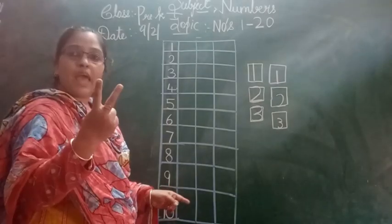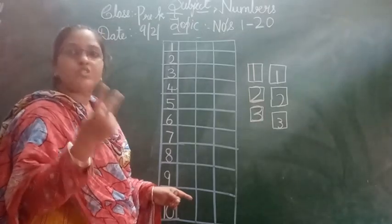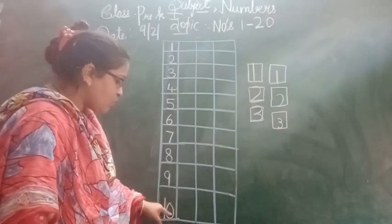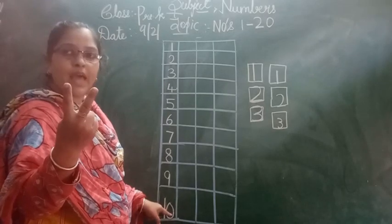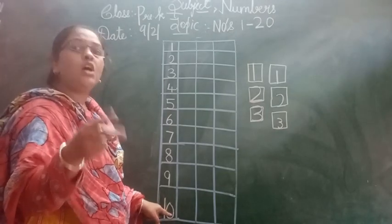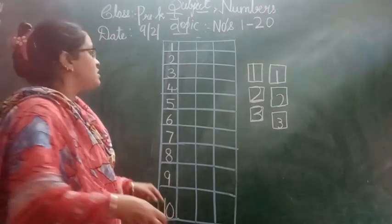From 10 we will be having 2 digit numbers. 2 digit numbers means 1 digit, 2 digit. 2 numbers we will be having, right? So it is called 2 digit numbers. See children again.